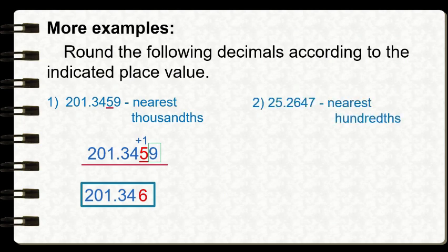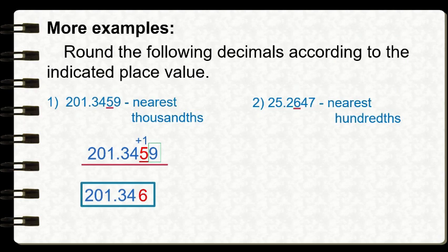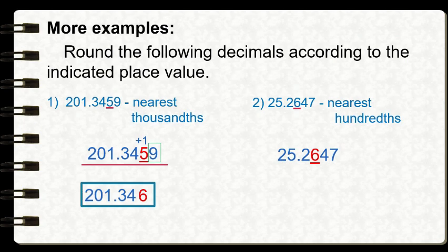Number two: twenty-five and two thousand six hundred forty-seven ten-thousandths, rounded to the nearest hundredths. First, identify our rounding place — the hundredths place — which is occupied by the digit six. Next, look at the digit to the right of our rounding place, which is four.